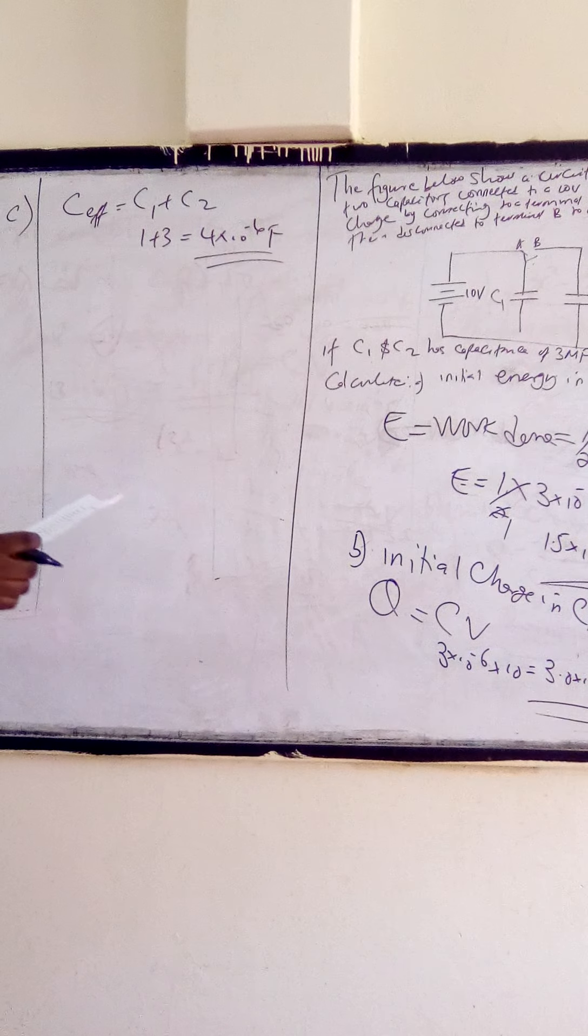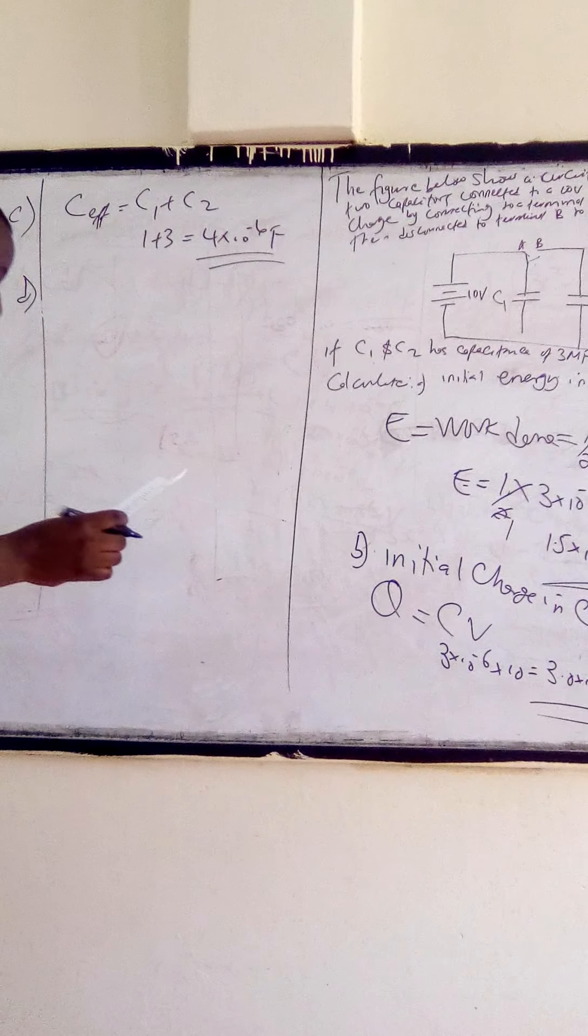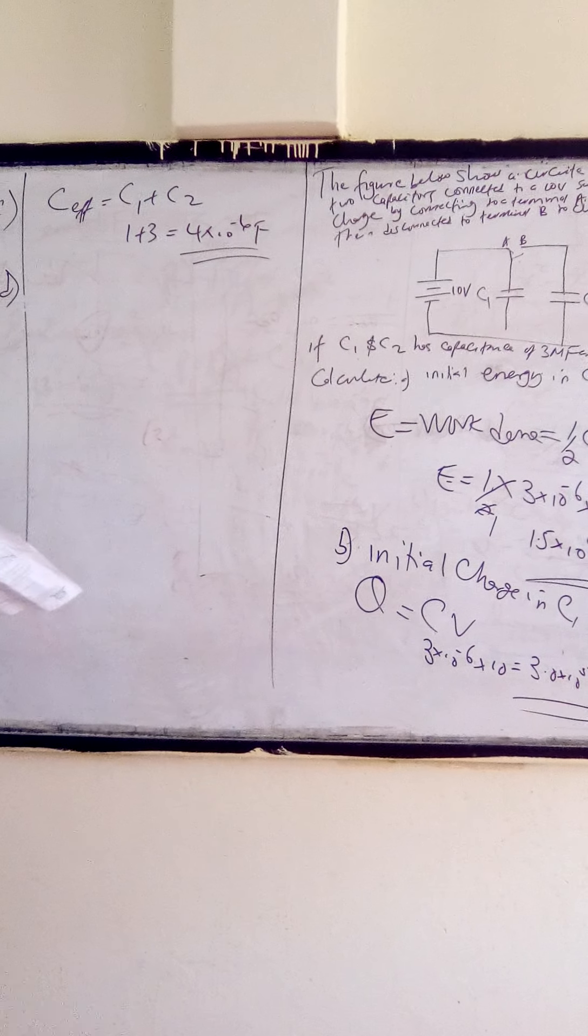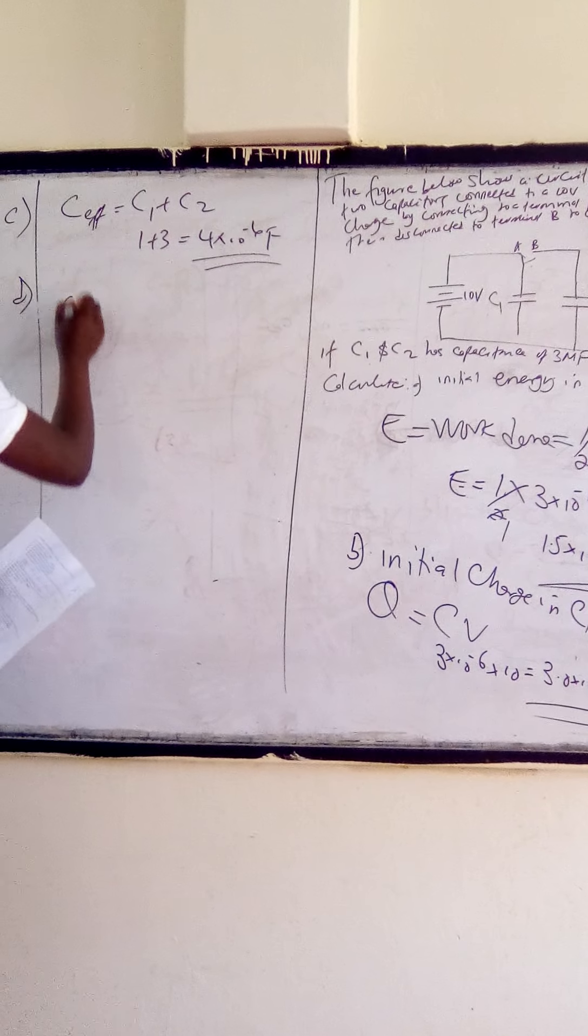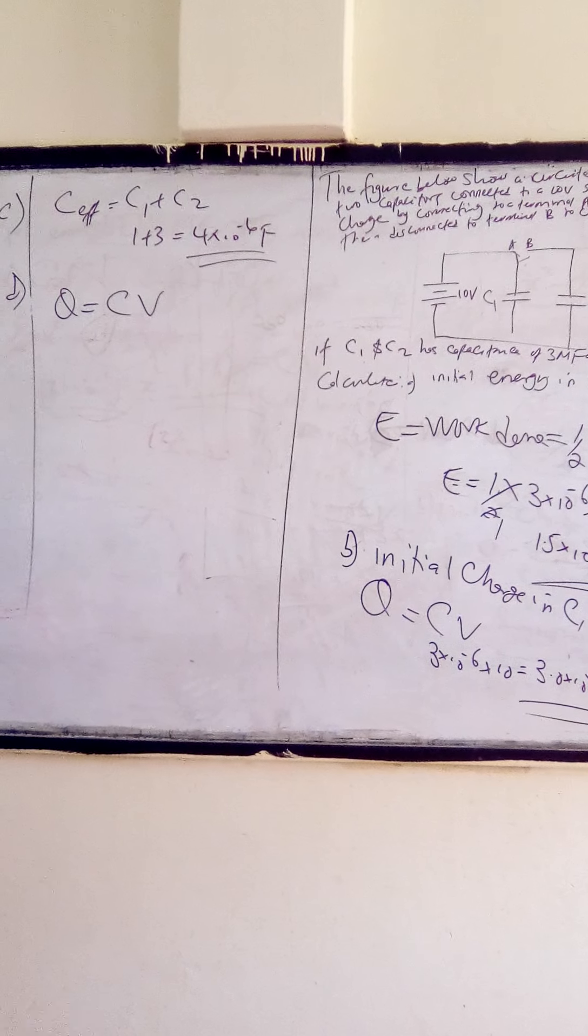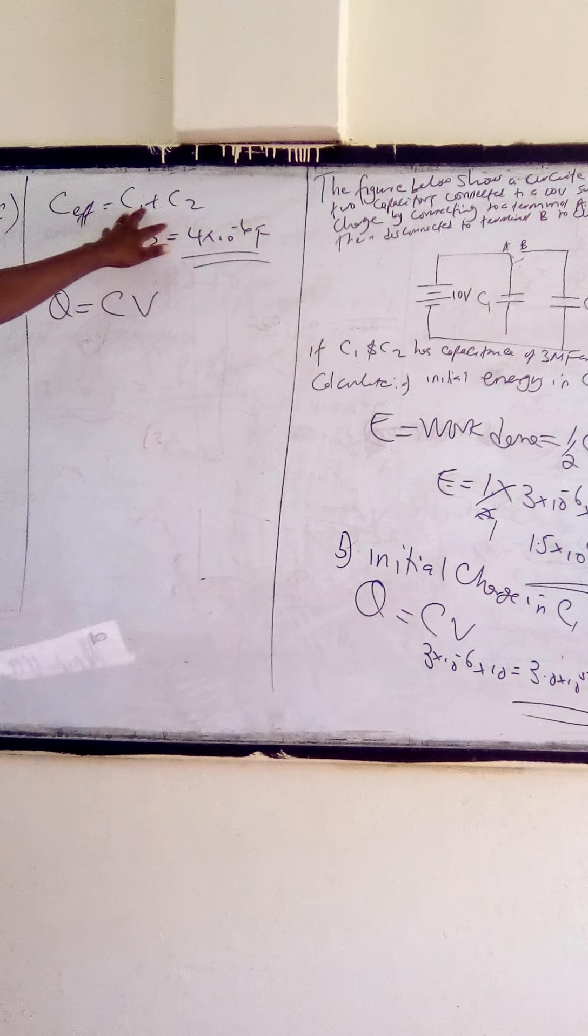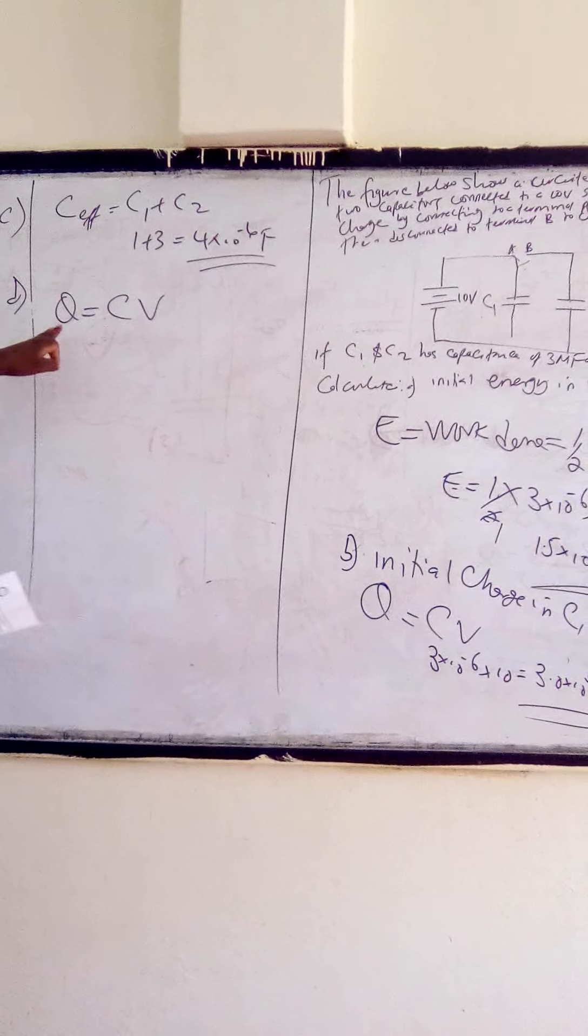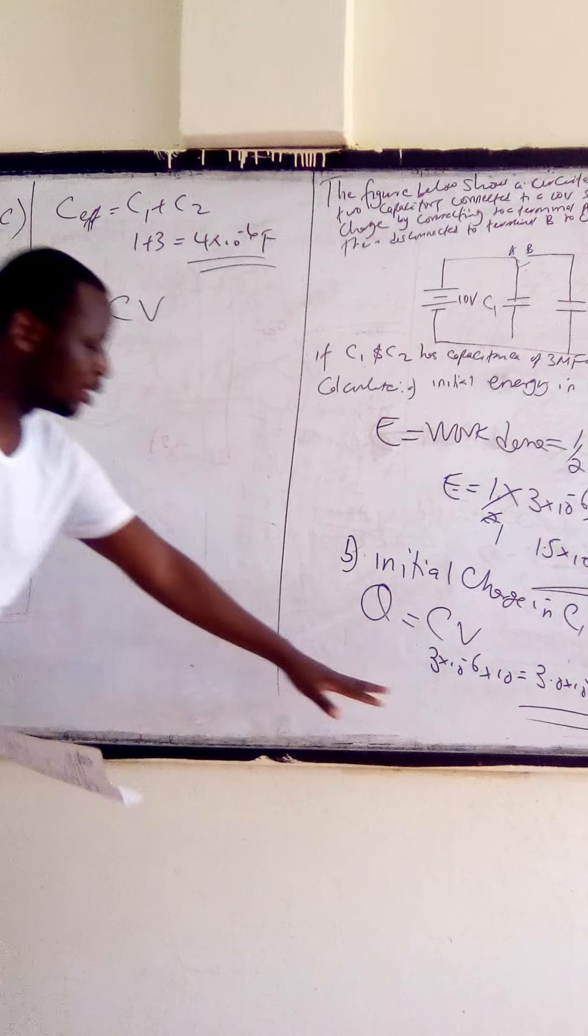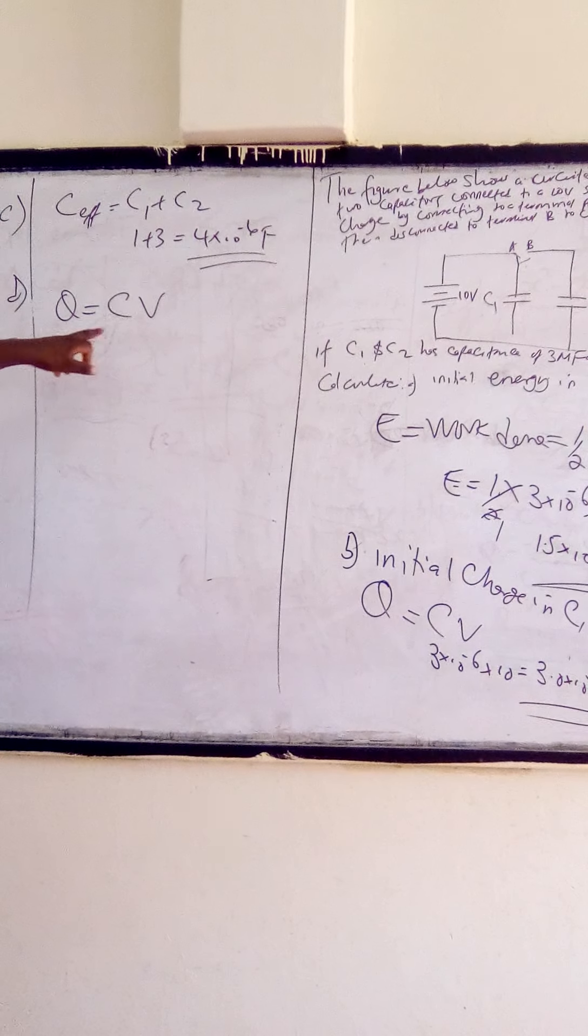For part D, we are asked to calculate the potential difference across C1 and C2. We know that charge equals CV. In this case, when capacitors are connected in parallel, we have the same voltage. So the charge that we had obtained in B, we will use it here with the effective capacitance from C.